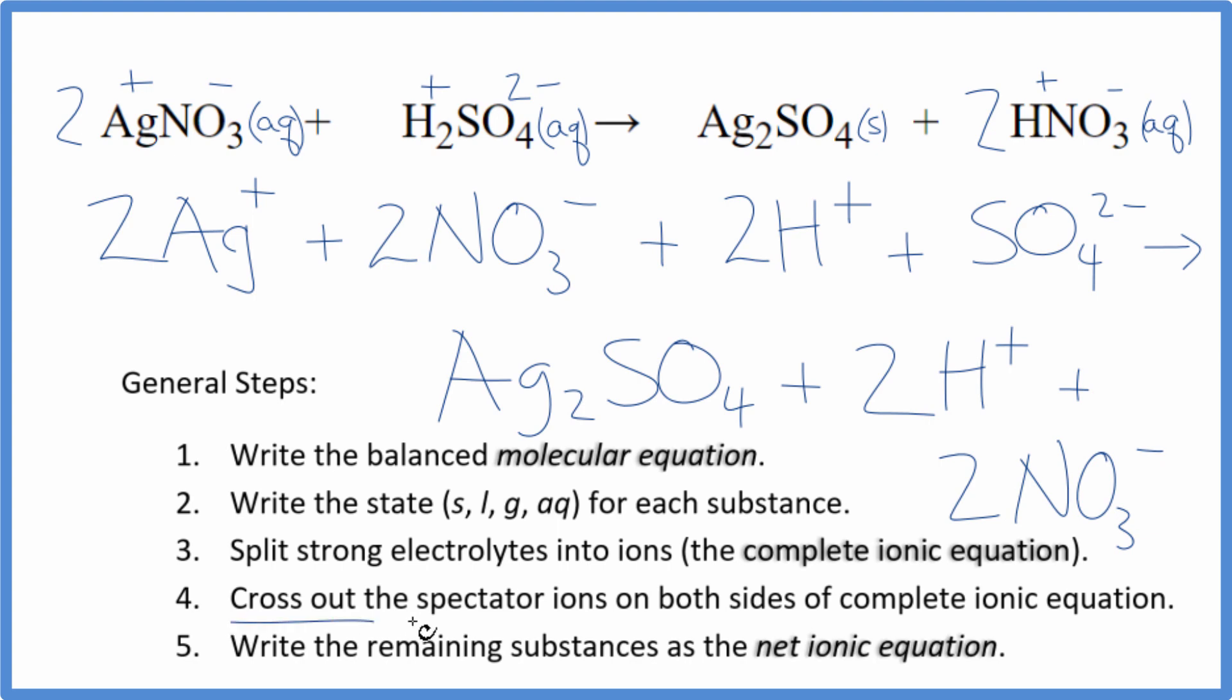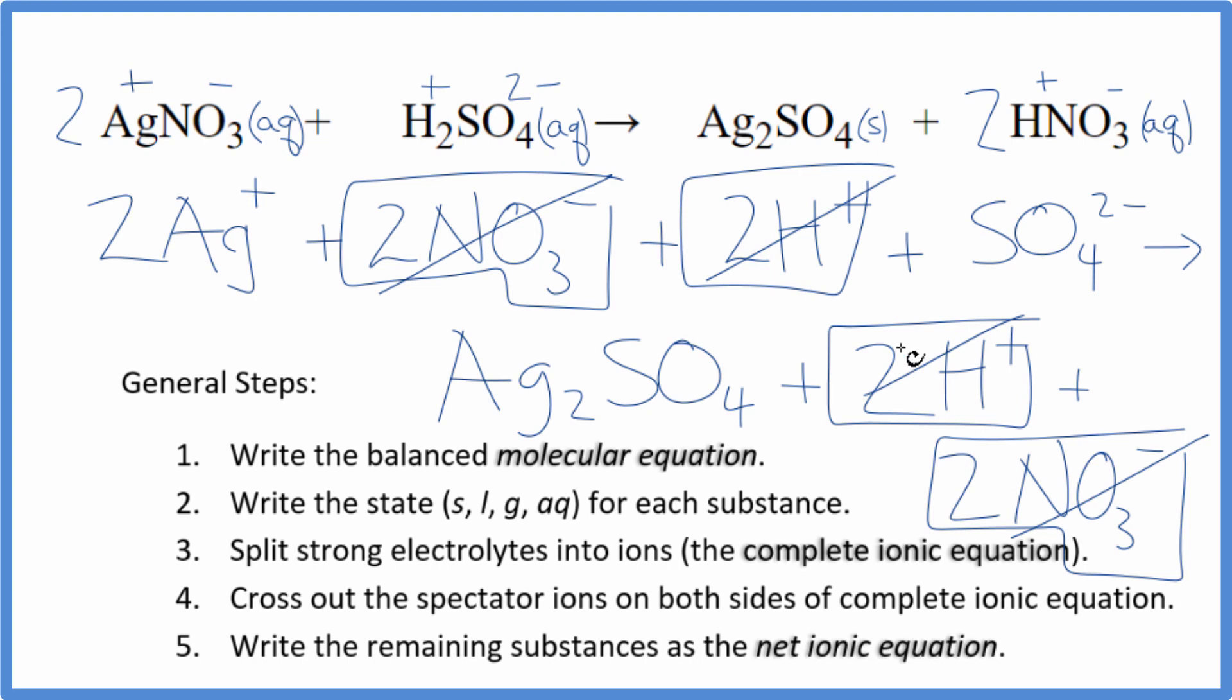Now we cross out the spectator ions that are on both sides. We're looking for things that are the same in the reactants and products. Two nitrate ions in the reactants, two in the products - get rid of those. Two hydrogen ions in the reactants and products. Those are spectator ions, cross them out.